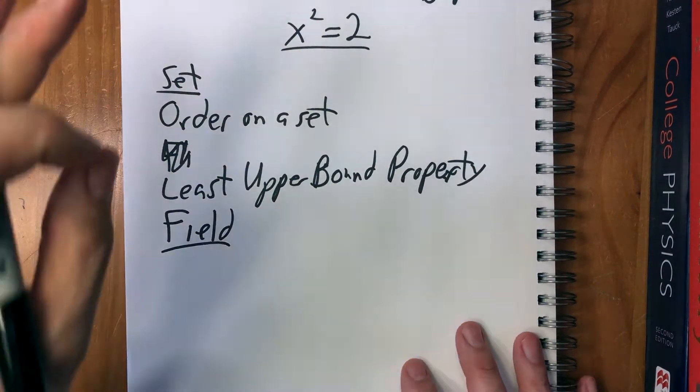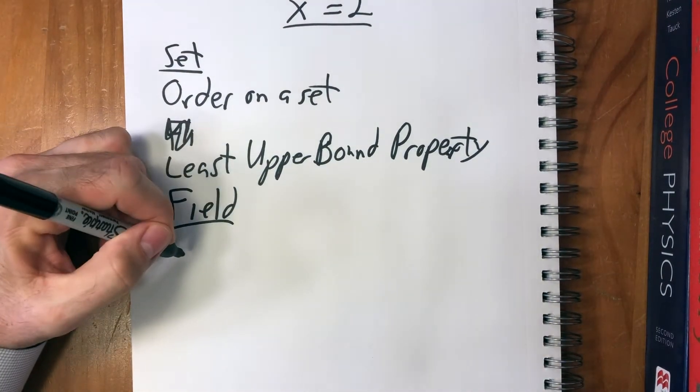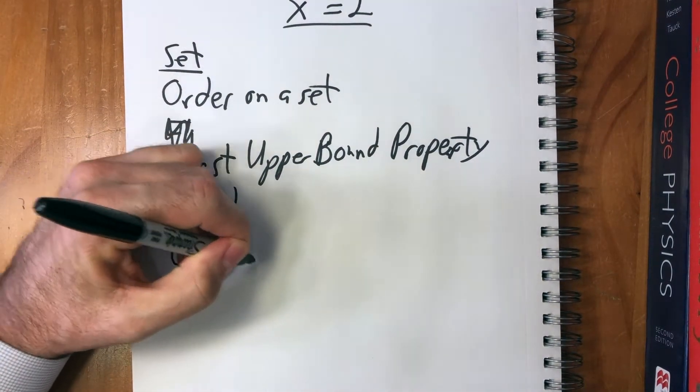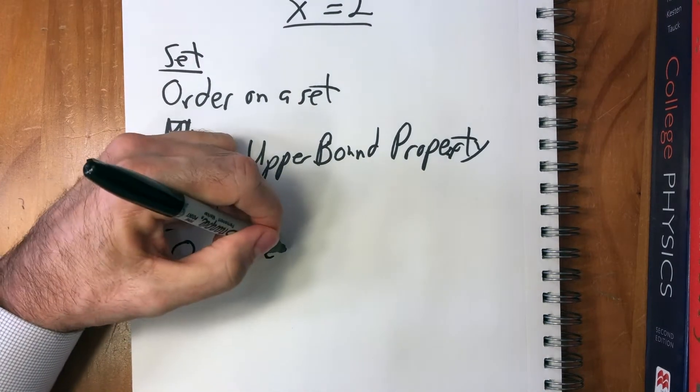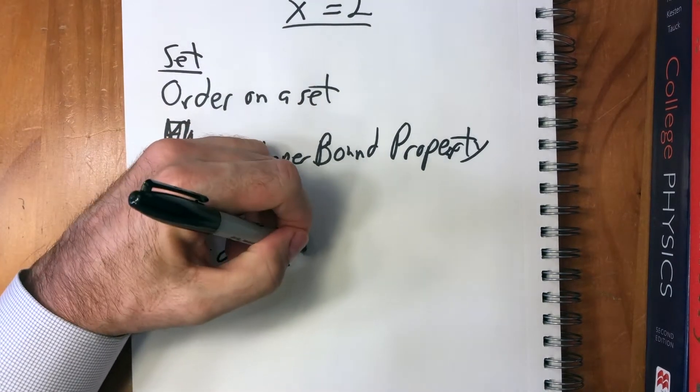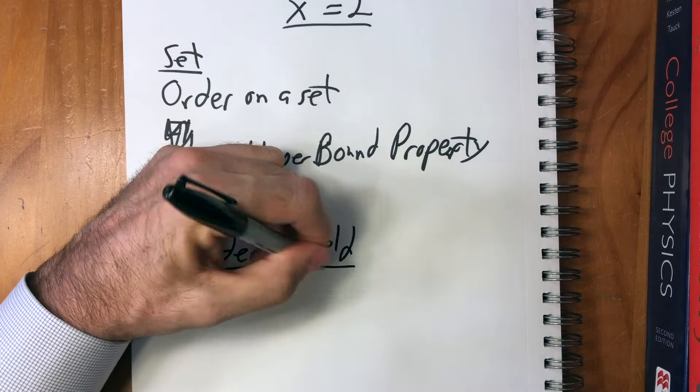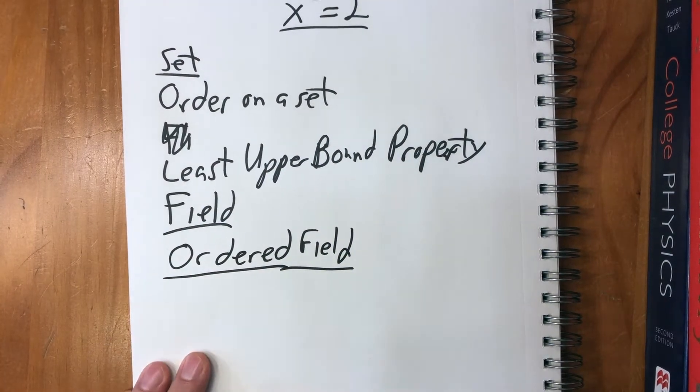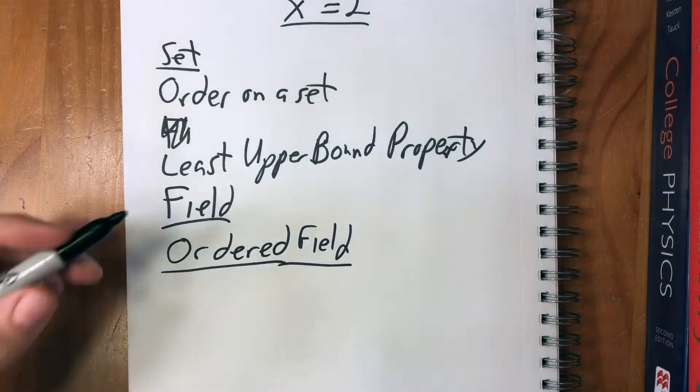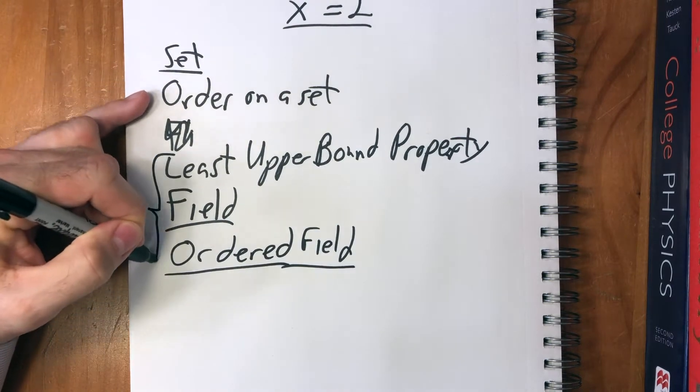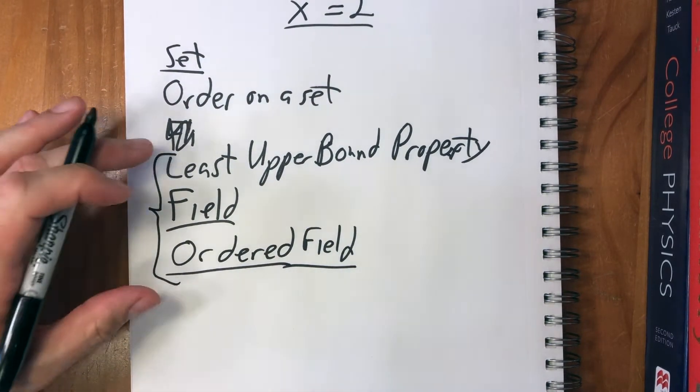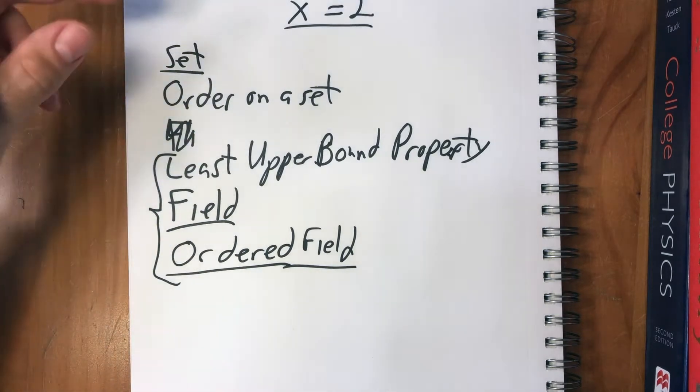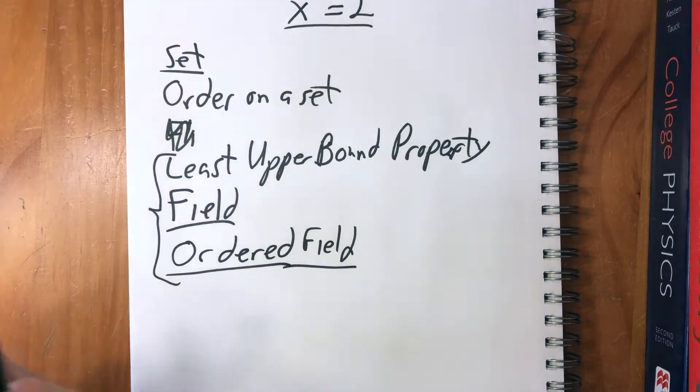So the last thing that we have to do, what we're going to be doing with this video is giving the properties that make an ordered field, and then some properties of those. And so finally, the reason we've had to look at these three things is that these three things together are what make a real number system.